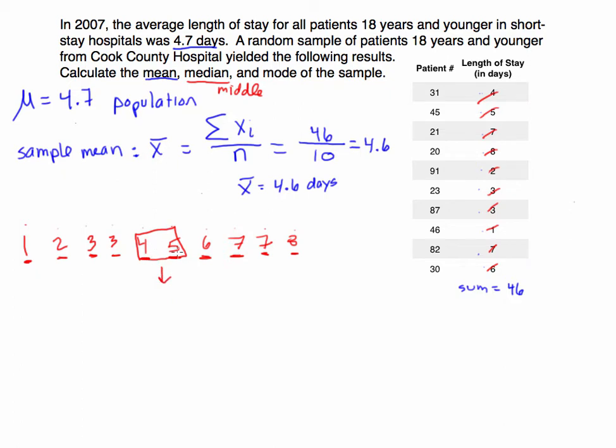So to find the median, you're going to take the two middle numbers and just average those out. So we're going to take 4 plus 5, divide it by 2. We're going to find the average of 4 and 5, which in this case is 4.5. So our mean is 4.6 days. Our median is 4.5.